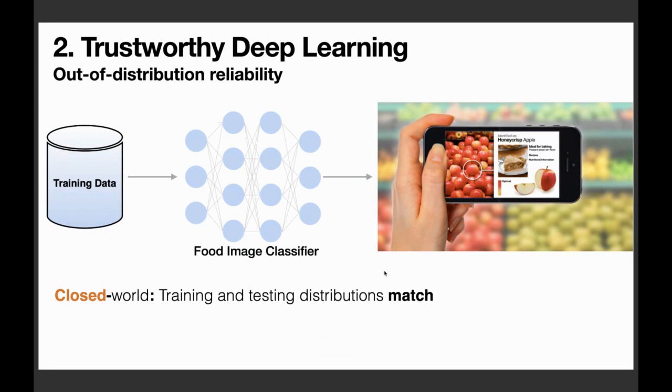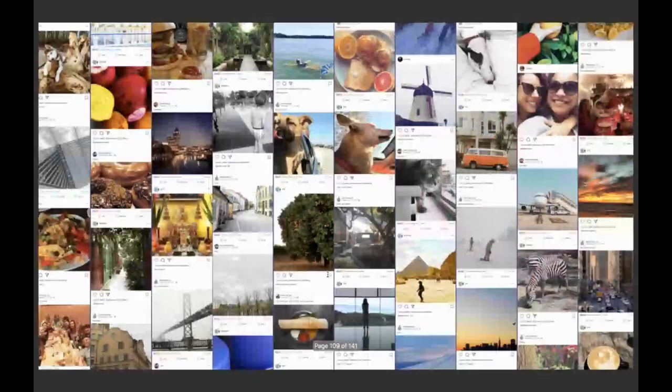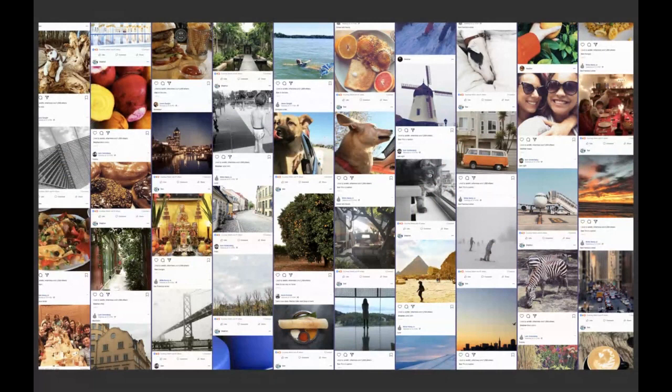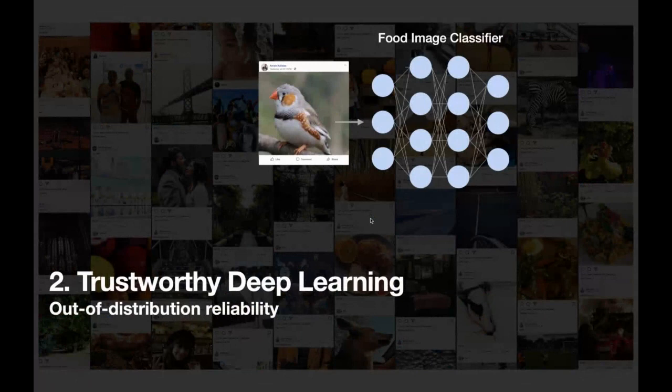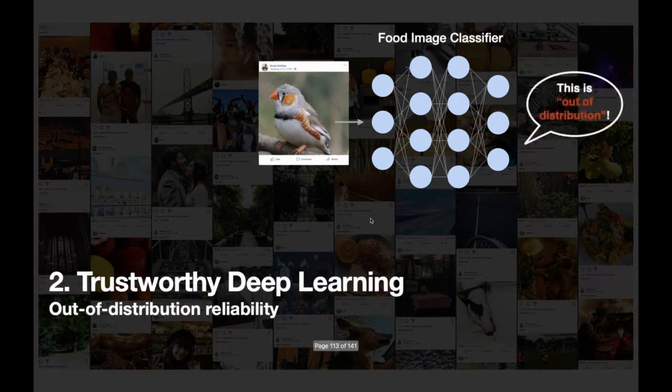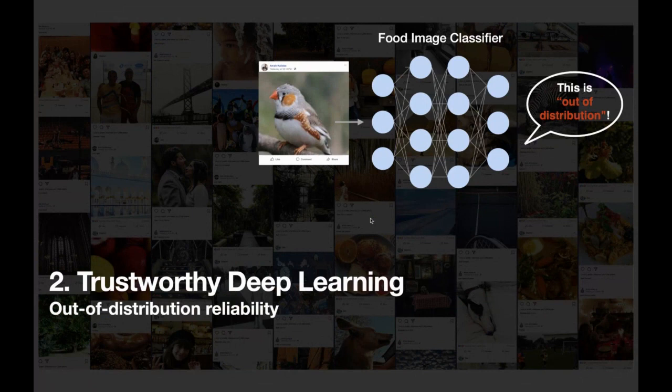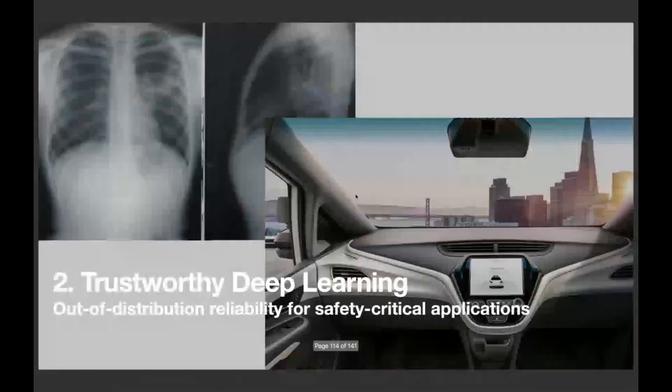In a closed world setting, you would imagine when you deploy this app in the real world, you would expect the users to take pictures just like your training data. However, the reality is closer to an open world setting where the training and testing data might very likely differ from each other. In fact, this real world data can be anything beyond what you expect. This is one of the most important lessons I've learned during my industry experience.